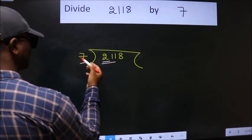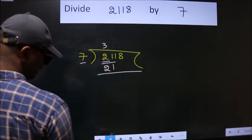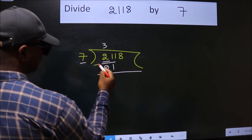When do we get 21 in the 7 table? 7 times 3 is 21. Now we should subtract. We get 0.